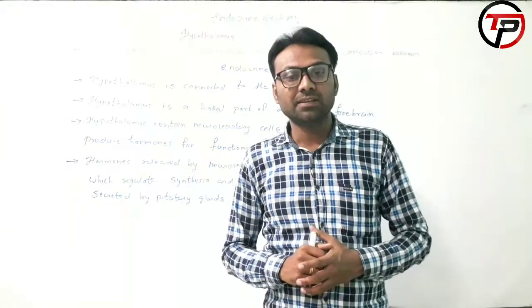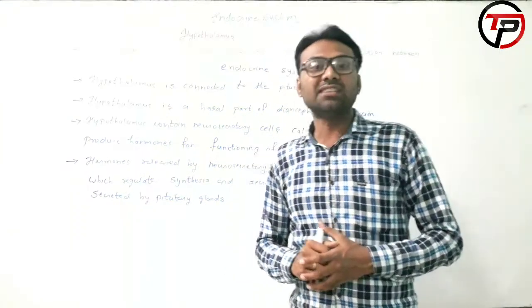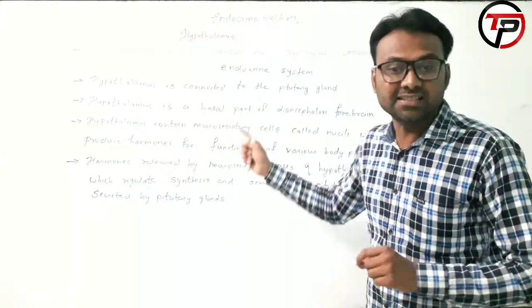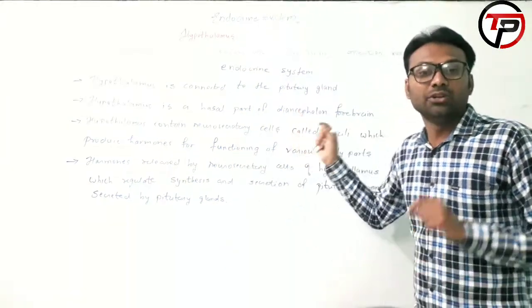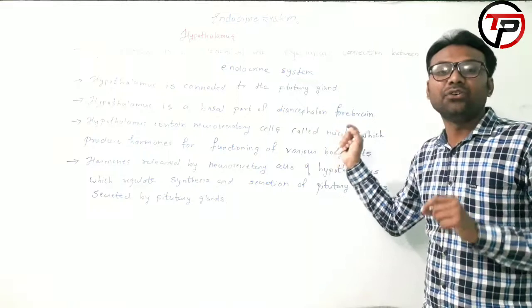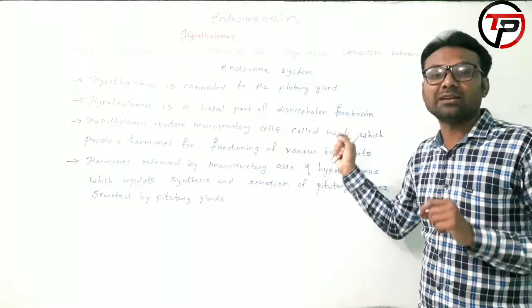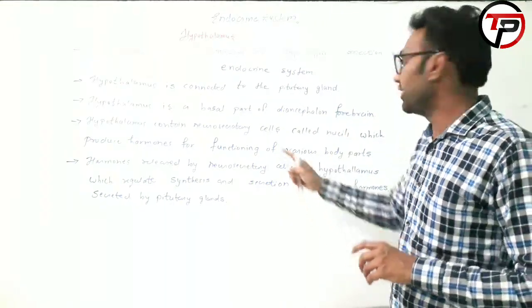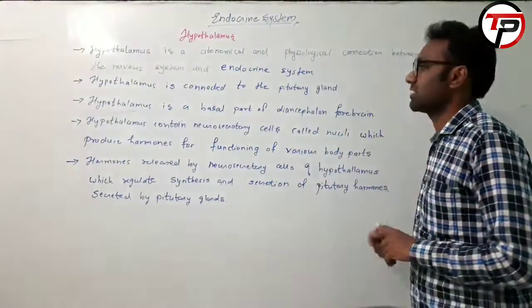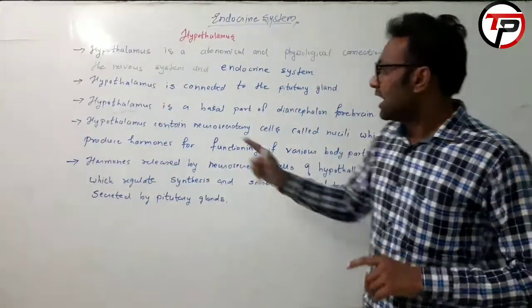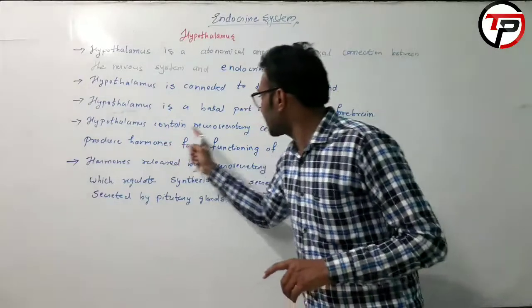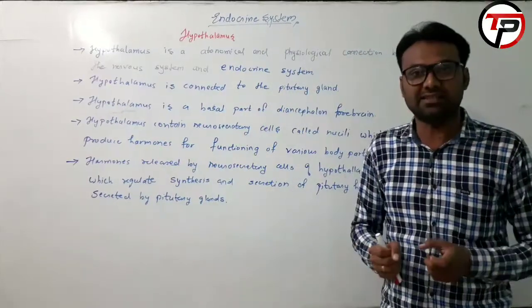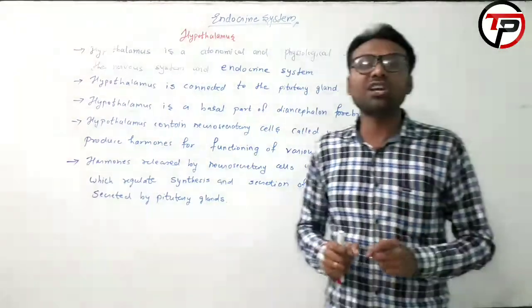Hypothalamus contains neurosecretory cells called nuclei, which produce hormones for the functioning of various body parts. These neurosecretory cells are a key feature of the hypothalamus.